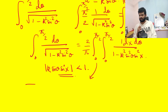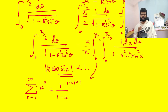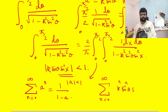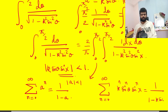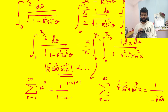The key idea: since |a| < 1, we have the geometric series Σ_{n=0}^∞ aⁿ = 1/(1−a). Substituting a = k² sin²θ · sin²x — whose absolute value is also less than 1 — we get 1/(1 − k² sin²θ · sin²x) = Σ_{n=0}^∞ k^{2n} sin^{2n}θ · sin^{2n}x.